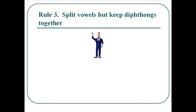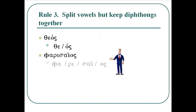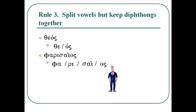Rule number three: split the vowels but keep the diphthongs together. For example, the word the-os: you split between the epsilon and the omicron because they're two vowels, so it's the-os. Pharisios: you split between the alpha-iota, which is a diphthong, and split that off from the omicron-sigma that ends the word, so it's Pha-ri-sai-os. Cardia: you split between the rho and the delta per the previous rule, and then after the iota you split the alpha off because iota and alpha are two vowels in a row, so it's kar-di-a.